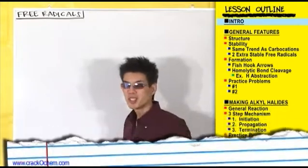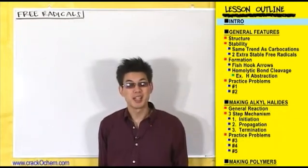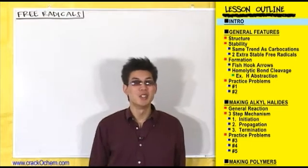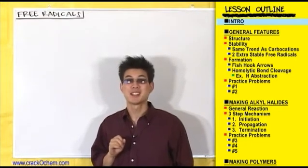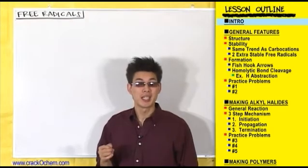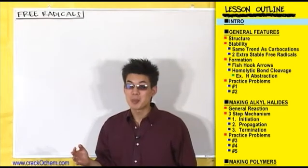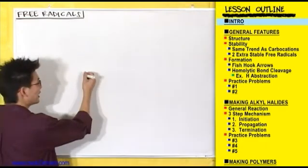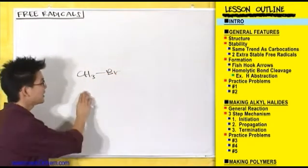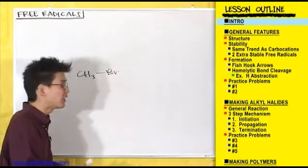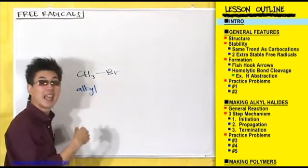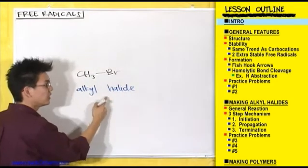Today we're going to be talking about free radicals. But before we get into free radicals, I first want to tell you why it's important to study these things. Free radicals are important for two main reasons in organic chemistry. Number one, free radicals give us one way to make things called alkyl halides. Alkyl halides are very important compounds in organic chemistry — we use them all the time in many different types of reactions. For example, CH3Br is an alkyl halide: CH3 is an alkyl group, and bromine is a halogen, so we call this an alkyl halide.